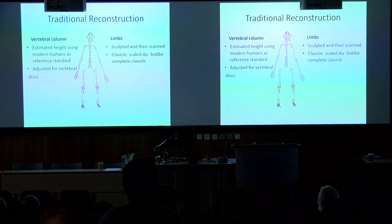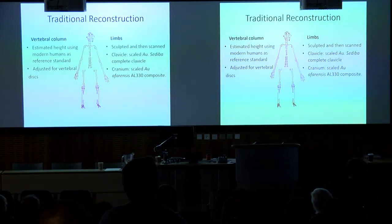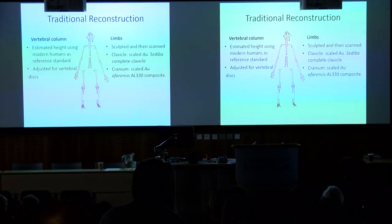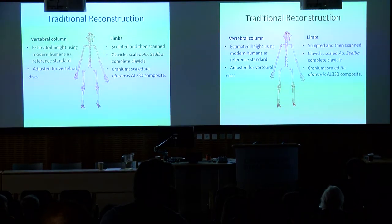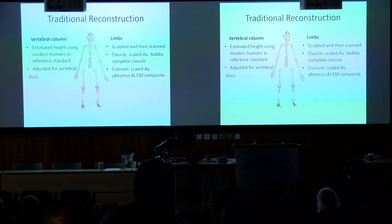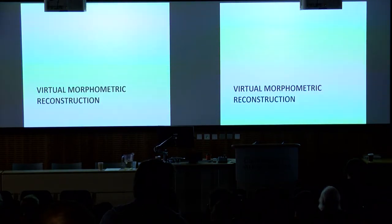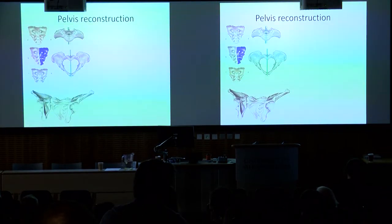For the cranium, rather than morphing in all the fragments from Lucy individually, we used a composite cast known as the AL 330 composite and scaled it to the fragments that exist for Lucy. So that's all fairly straightforward, not too work-intensive reconstruction. Now for the fun, shiny stuff — the virtual reconstruction of the pelvis.